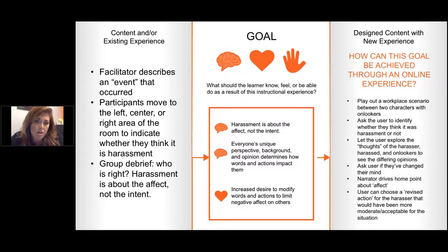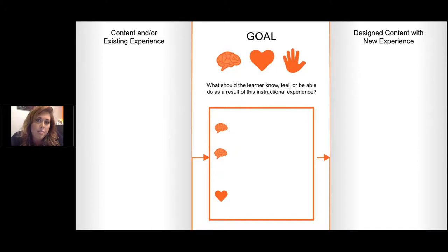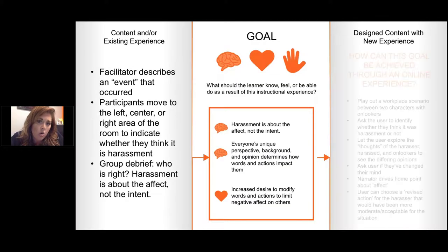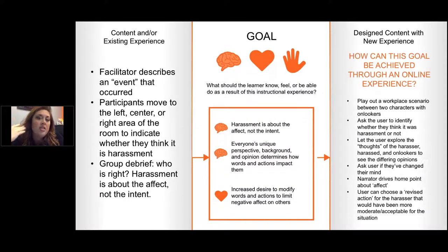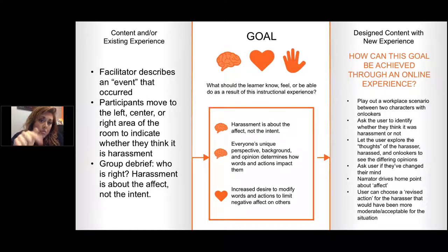So here you can see the design we've chosen on the right looks very different than what we have on the left, but both of them achieve these goals. I would argue the right-hand side achieves it better because we actually have them think about what would have been a more moderate action. This blank template is also going to be included in the handout we give you. We're going to walk through several of these together, and I want to start getting your ideas. Do you have any questions about how this model works?